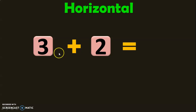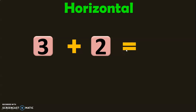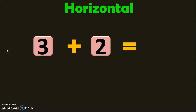We know that in addition, two numbers are added using the plus symbol, which represents addition, and the answer is called the total or the sum, written after the equal to symbol. The method I am going to teach you is called the mind and fingers method. Let us see how to add these two numbers using the mind and fingers method.